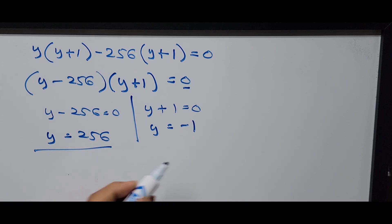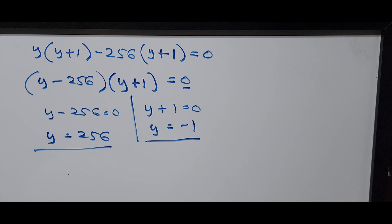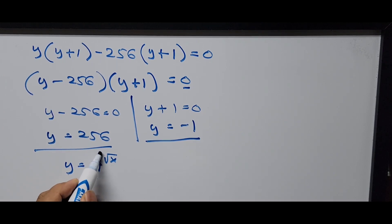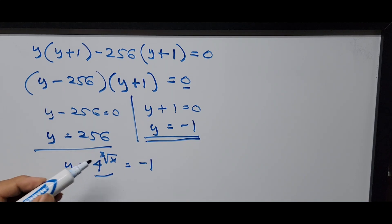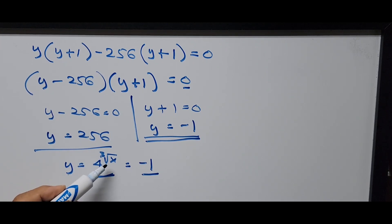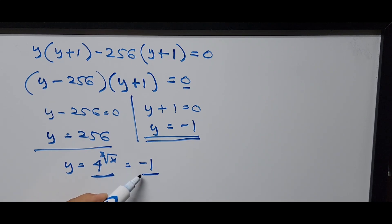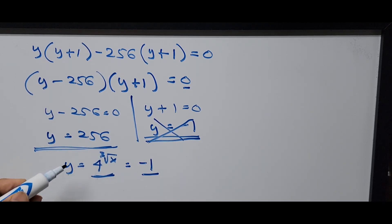So if we focus our attention here, since y is just a substituted variable in place of 4 raised to the cube root of x — from earlier, y is 4 raised to the cube root of x. If we substitute the negative value, 4 raised to the cube root of x equals negative 1. And if you notice, 4 raised to the cube root of x is always a positive value. So negative 1, we cannot use that one — this is a false statement. So we're crossing out y equals negative 1, and instead using y equals 256. So 4 raised to the cube root of x is now 256.